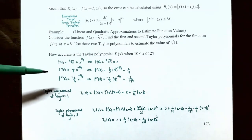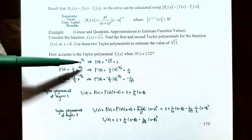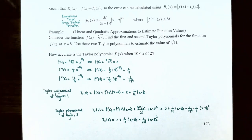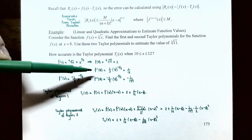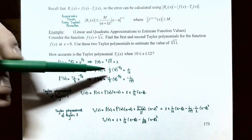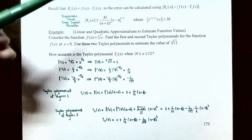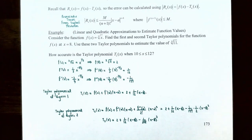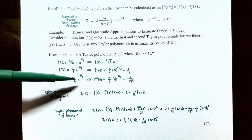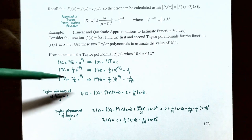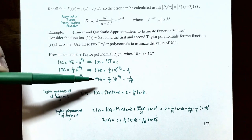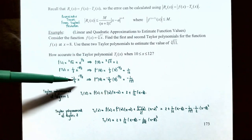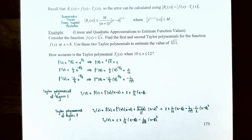Taking the derivative: f′(x) = (1/3)x^(−2/3) by the power rule. Evaluating at 8: f′(8) = (1/3) · 8^(−2/3) = 1/12. Taking the second derivative: f″(x) = (−2/9)x^(−5/3) by the power rule again. Evaluating at 8: f″(8) = (−2/9) · 8^(−5/3), which simplifies to −1/144.